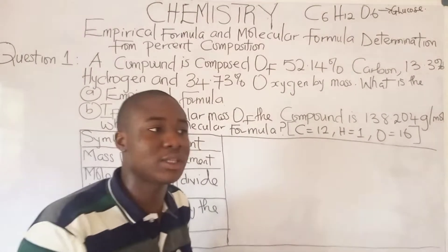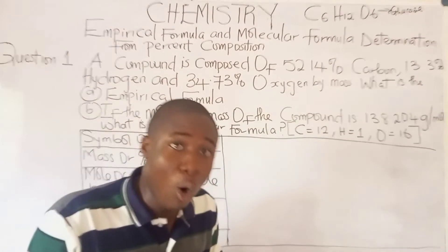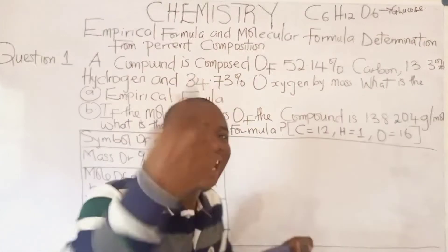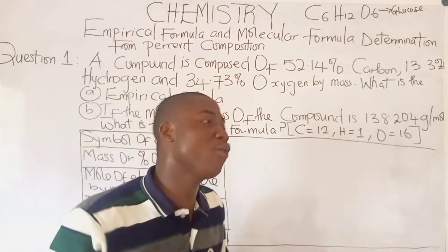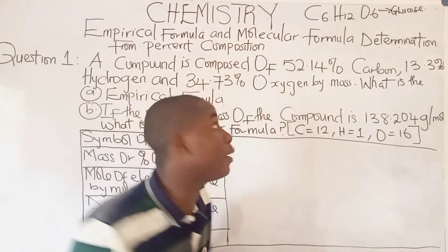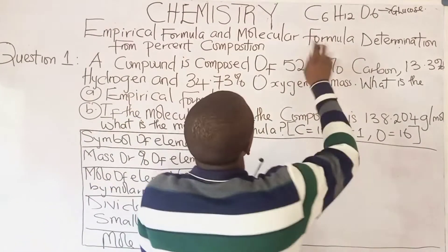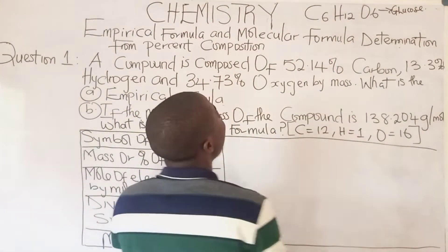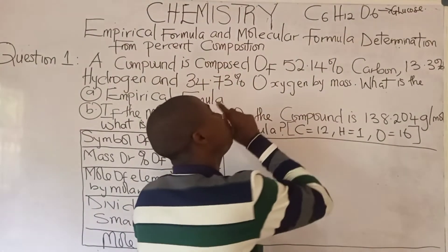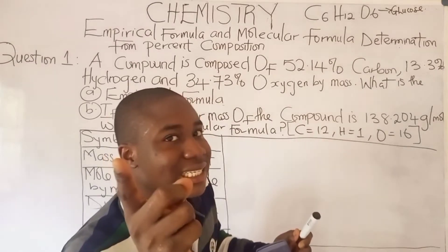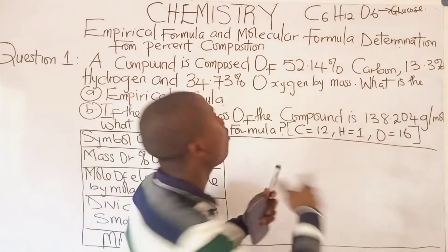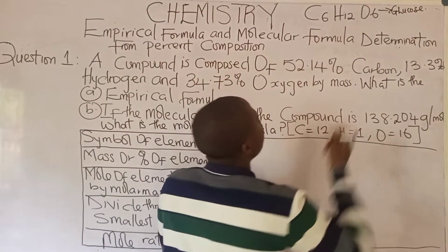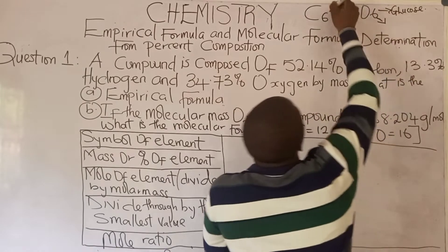Molecular formula talks about the actual mole ratio of that particular compound. Empirical formula is the simplest formula of a compound. So what is the simplest way we can write this compound? That means when we divide through all of them by 6, we can have a simpler formula.